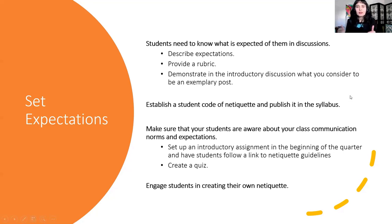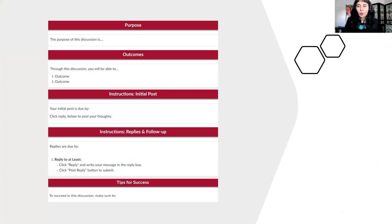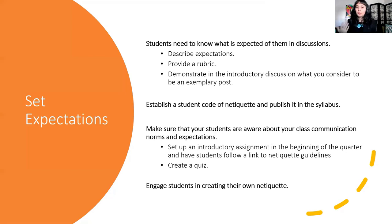Another reason is maybe you didn't set expectations clearly. Students need to know what is expected of them in discussions. They may be taking multiple online or hybrid courses, and each instructor has different expectations. It's important to explain your grading expectations — including a rubric — communication expectations, and deadline expectations. Anything you expect students to do, you need to tell them. You could spell out tips for success in that template, put expectations in the netiquette guide, include communication norms, put them in the syllabus, or communicate through video announcements.